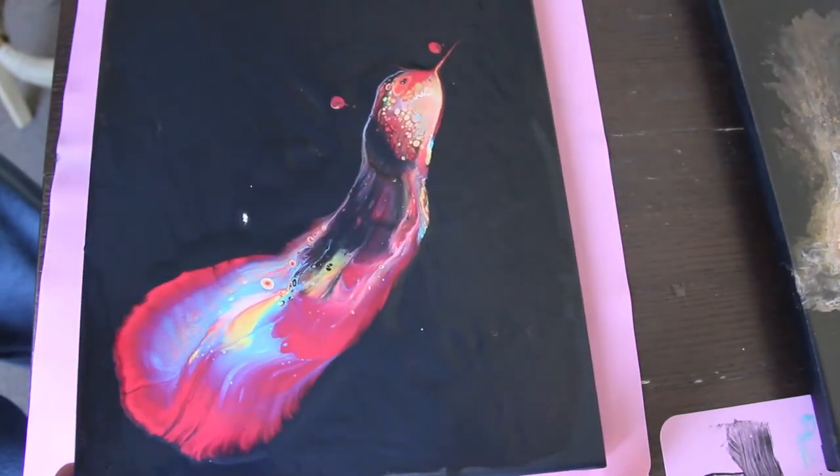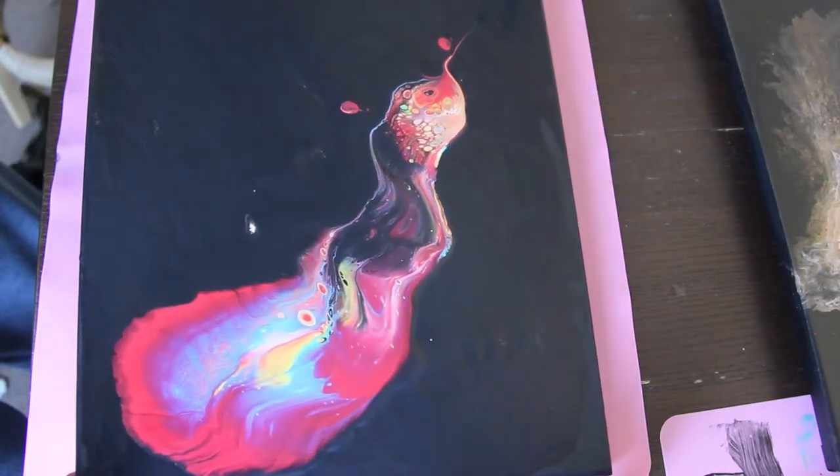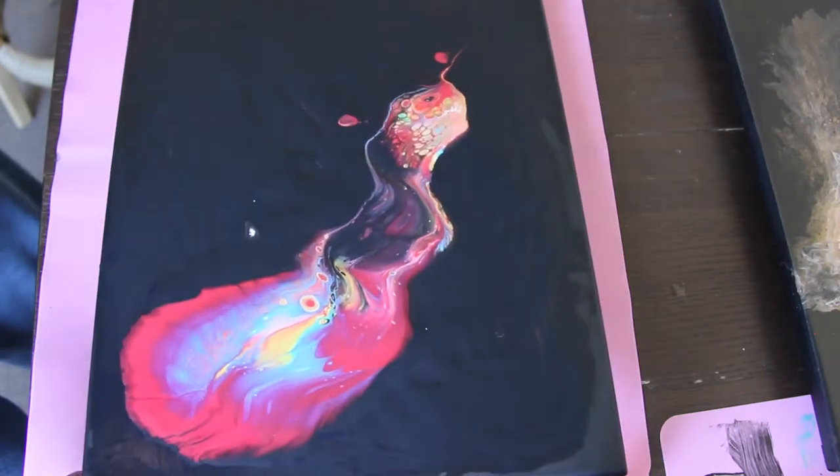And then I'm going to tilt the canvas so that the paint can move around and hopefully make the shape of a butterfly wing.